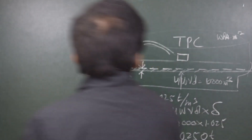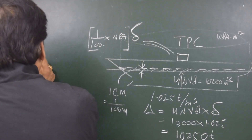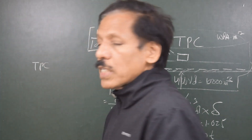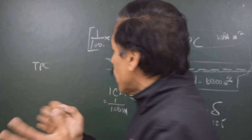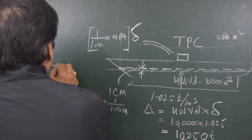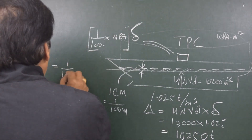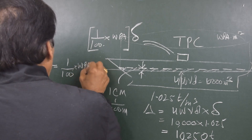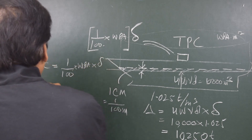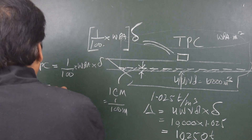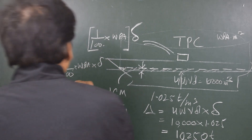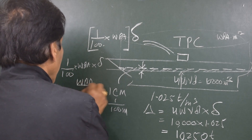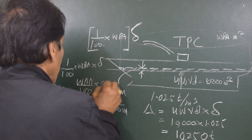So the mass that increases the draft of the vessel uniformly by 1 centimeter (that is 1/100 meters) should be called TPC — tons per centimeter. TPC is equal to (1/100) × water plane area × density. So if we want to find out the TPC of the vessel, it is water plane area divided by 100, multiplied by density.